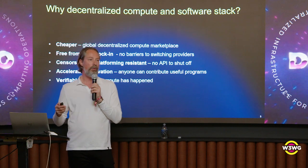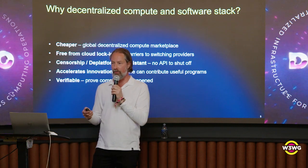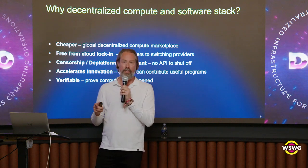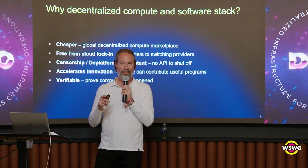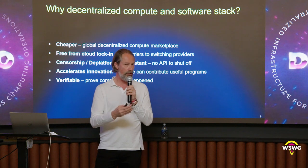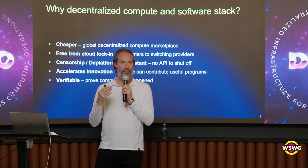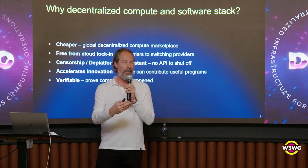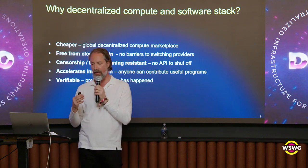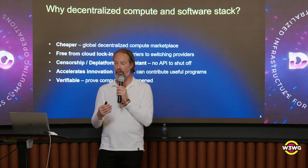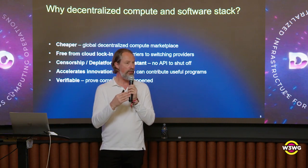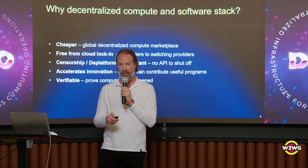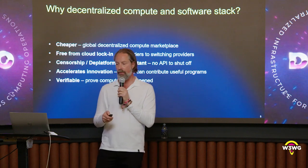Why are we doing this? What are the benefits? It's not just an academic experiment. There are a couple of key reasons. First, it's cheaper — when you have a decentralized compute marketplace, as we heard from Akash, it gets a lot cheaper. You also want to be free from cloud lock-in. Cloud ecosystems are easy and cheap to start, but as you scale the pricing ramps up. You want to be censorship resistant and de-platforming resistant. And you want to enable innovation by being able to build without fear of your API being cut off or terminated. We think you can actually enhance innovation dramatically with decentralized compute.